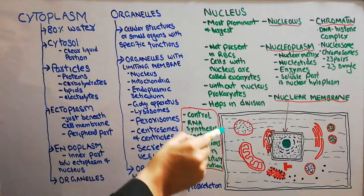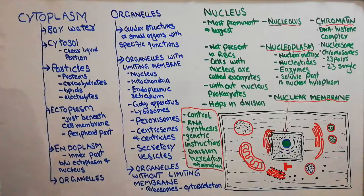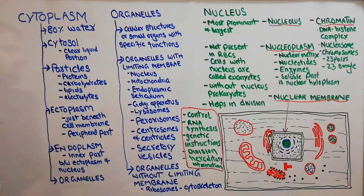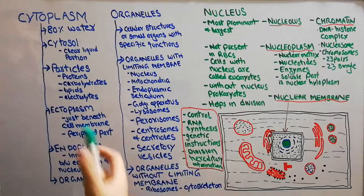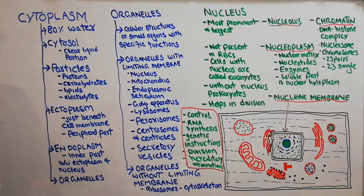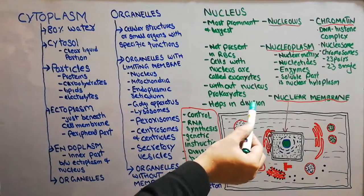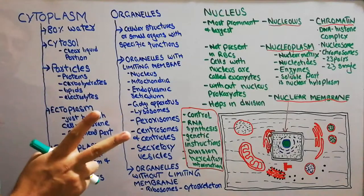Within the cytoplasm, there are different types of cell organelles. The word organelles basically comes from Latin and it means small organs. So organelles are the small organs of the cell that have different functions which help the cell to achieve its different functions. There are basically two types of organelles: those surrounded by a limiting membrane, and those which are not surrounded by a limiting membrane.